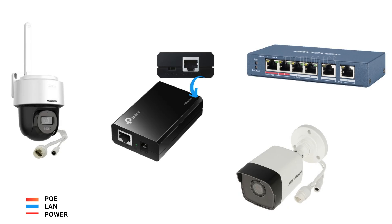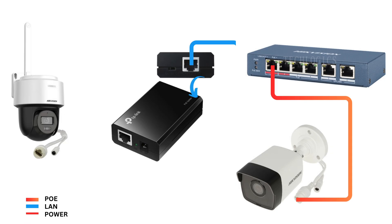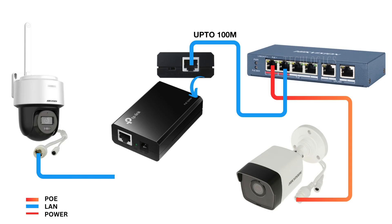To ensure optimal LAN and DC power distribution up to 100 meters between the PoE switch and the PoE splitter, it is essential to use a high-quality CAT-6 cable. A reliable CAT-6 cable minimizes signal loss and interference, allowing for efficient transmission of both power and data, enhancing network performance and maintaining consistent functionality for connected devices throughout the maximum distance.